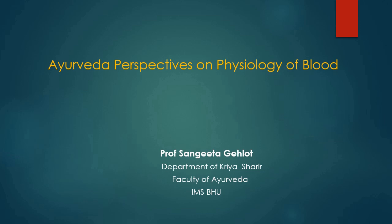Ayurvedic physiology is based on Tridosh, Dhatu, Mal, Agni and Srotas. Seven Dhatus have been considered in texts of Ayurveda. The first one is Rasa while Rakta is the second Dhatu. Blood is a connective tissue which is in fluid form. Rasa and Rakta Dhatu together can be considered as blood. Both are liquid and in continuous circulation in the intravascular compartment, and their measurement is described in terms of Anjali Praman. The function of Rasa Dhatu is Preenan, meaning Nutrition.